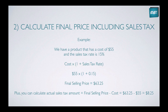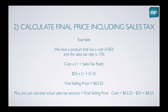Here's our example. We have a product that costs $55 that we're going to sell, and we know we have to add 15% sales tax. So we plug in the numbers: 55 times 1 plus 0.15. Don't forget percentages — they need to be in decimal figures, so it's 0.15. If you plug that into a calculator, the final selling price is $63.25. Using that figure, you can also calculate the actual sales tax amount, which is final selling price minus cost: 63.25 minus 55, so the sales tax is $8.25.